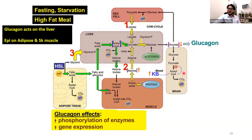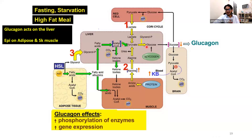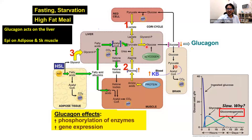Another significance: by the brain utilizing ketone bodies predominantly, your overall demand for glucose decreases. This saves some muscle proteins from being broken down for gluconeogenesis. So there are two significances to ketone body utilization by the brain: number one, save glucose for the red blood cell; number two, decrease the body's demand for glucose and thereby spare or decelerate muscle protein breakdown.